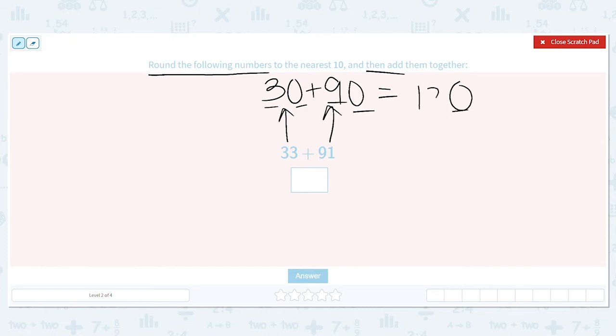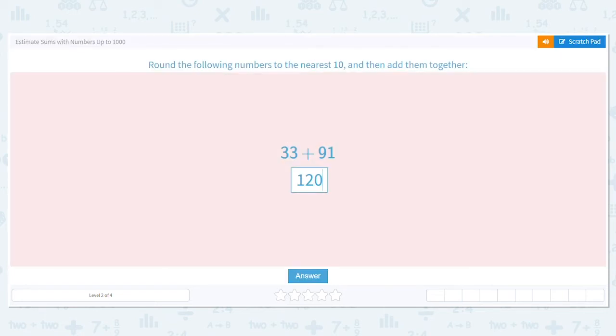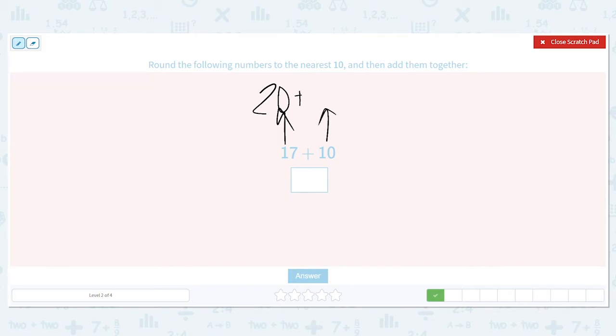Next one. Again, we're rounding then adding. What does 17 round to, to the nearest ten? It's 20, it's closest to 20. And how about 10? 10 is a 10, so we can leave 10 alone. So what is 20 plus 10? 20 plus 10 equals 30. So my estimate is 30.